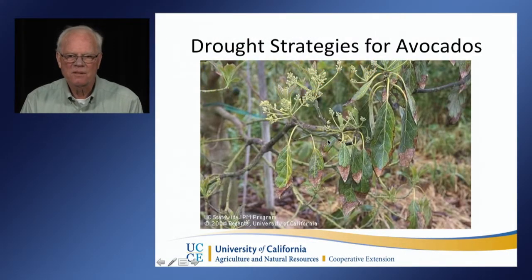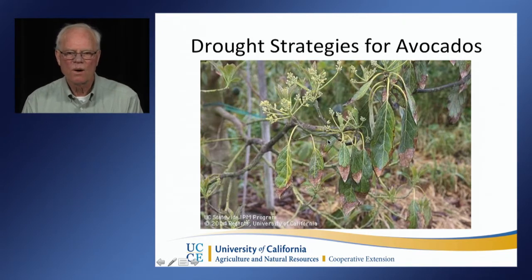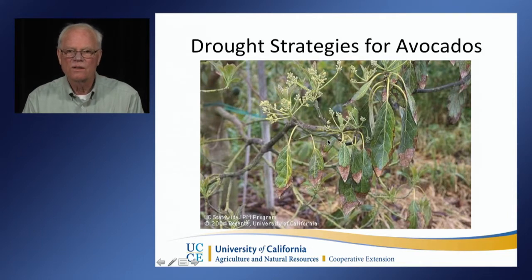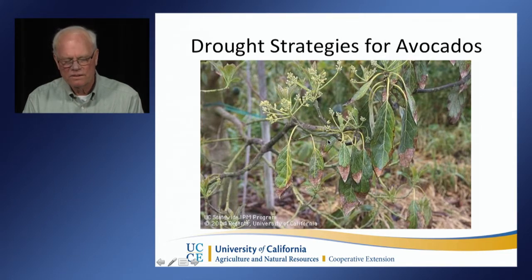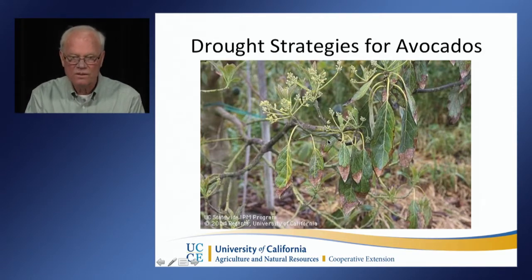My name is Ben Faber. I'm a farm advisor with the University of California Cooperative Extension in Ventura and Santa Barbara counties, where we grow avocados along the coast as well as mangoes, feijoa, and citrus. What we're going to talk about is drought strategies for avocados, but the principles will all be pertinent to other evergreen perennial subtropicals like citrus.